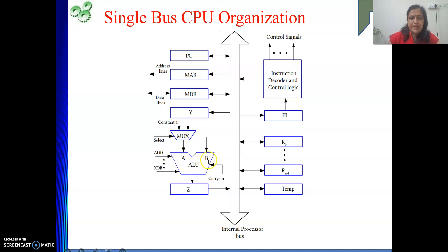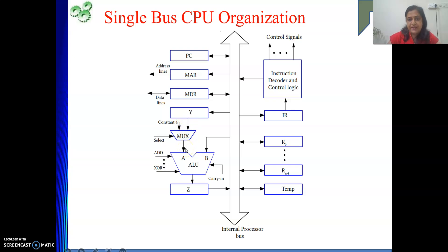The ALU performs most operations, and those operations are mostly binary — we require two inputs. One input comes from the bus, but the other input cannot come from the bus at the same time, so beforehand we keep another operand in the Y register. Also, for every instruction execution we increment PC by four, so that four is hardwired. Four or the content of Y will be one input of the ALU, selected via a multiplexer select line. The result is placed in the Z register. The Y and Z registers exist solely because of the single bus CPU organization.